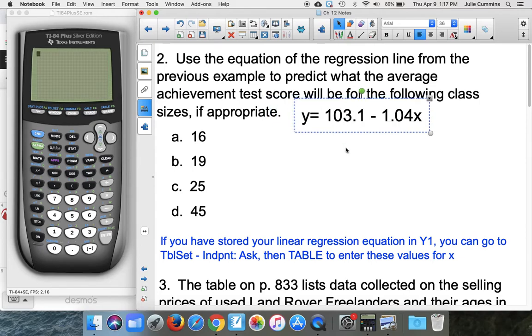Alright, so what this is saying is the y-intercept is basically saying if you had a class size of zero, you could expect a standardized test score of 103. Well, obviously that doesn't make any sense, a class size of zero.